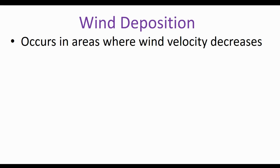Wind is going to pick up material through erosion, carry it somewhere else, but eventually the material is going to fall out. Wind deposition occurs in areas where wind velocity decreases. Just like with water, when the wind velocity slows down, some particles cannot remain airborne and they drop out of the air and form a deposit on the ground. We saw with water deposition that we got things like deltas when the velocity of the water slowed down too much. The same thing happens with wind.